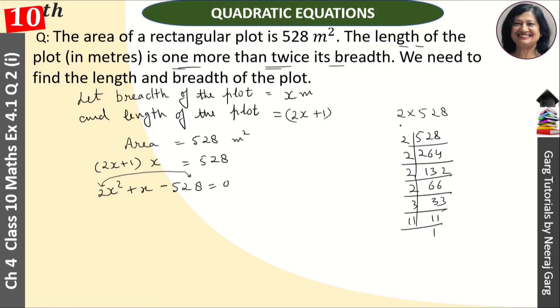We will make the difference equal to 1. So, 11 into 3 is 33, and 2 into 2 into 2 into 2 is 16. The difference between 33 and 32 is 1.